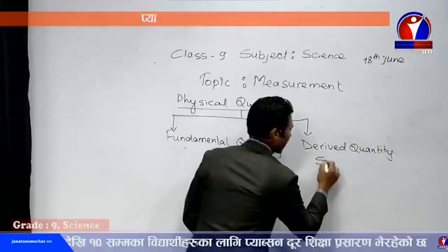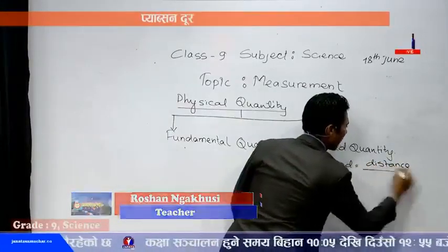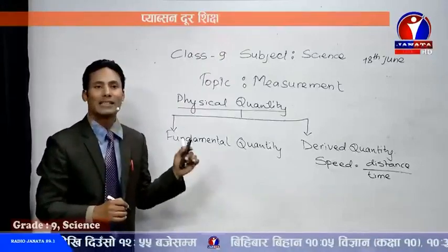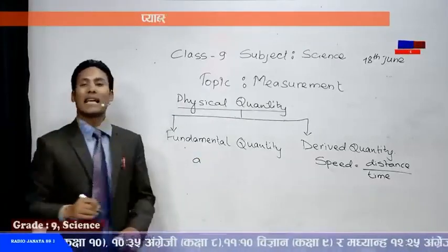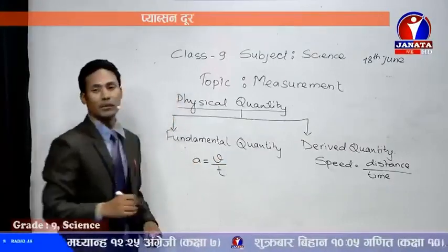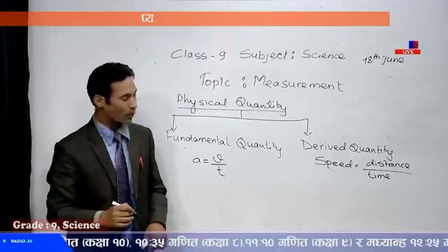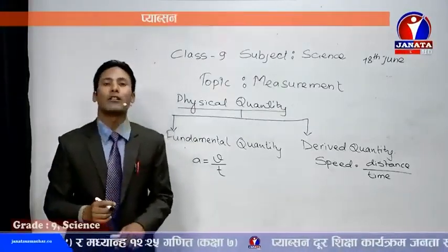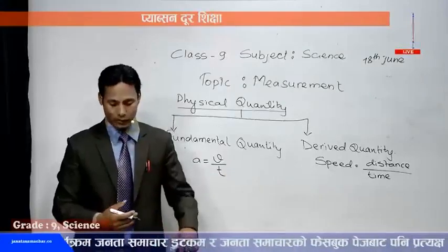Derived quantity means a quantity which can be expressed in terms of fundamental quantities. For example, speed can be explained in terms of distance (length) and time, so it is a derived quantity. Similarly, acceleration is also a derived quantity because it can be expressed in terms of velocity and time. Now, as a question for you: why is velocity called a derived quantity?